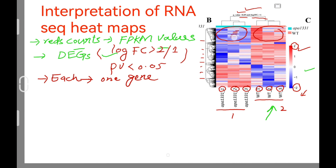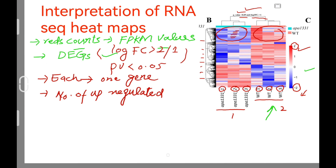This group of genes showing blue color was actually downregulated. So the heat map shows the number of upregulated and the number of downregulated genes. As the number of lines increases, we can see that the number of up- and down-regulated genes is high.